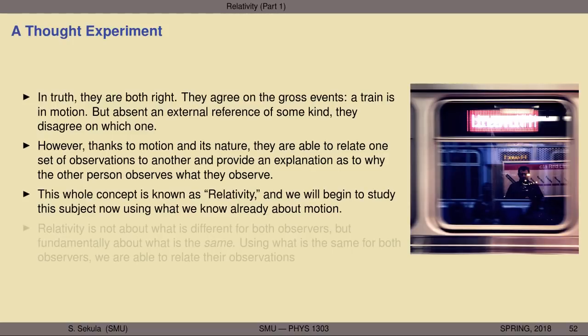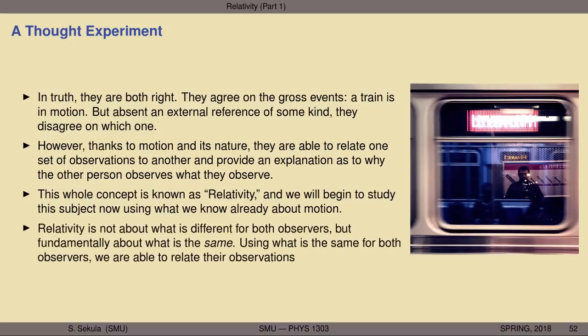We're going to begin to study the subject now using what we already know about motion. One thing I would like to emphasize at the beginning is that in the popular misconceptions of what relativity is, it's often said that relativity is a statement that anybody is correct independent of an absolute truth. But in physics, when we talk about relativity, it's not about what is different for both observers — that is the key. Certainly Sally or Bob could disagree on whose train is moving, and if we had a third observer we might be able to sort that out. But fundamentally, in order for them to relate their observations, it's not what's different that matters, but what is constant or the same for both of them.